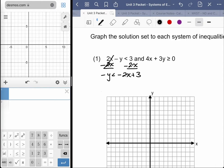So we have negative y. Once I subtract the 2x, we have negative y less than negative 2x plus 3. If I want to get that y by itself, I need to either multiply or divide both sides by a negative 1. You take your pick, it doesn't make a difference.